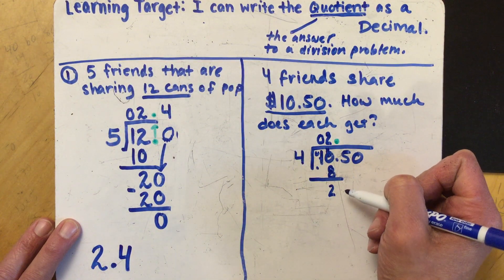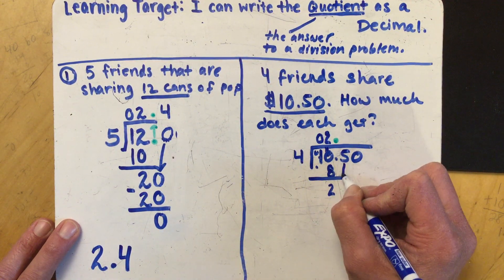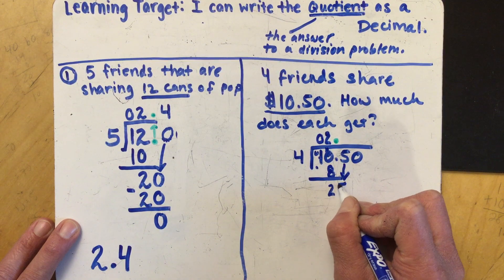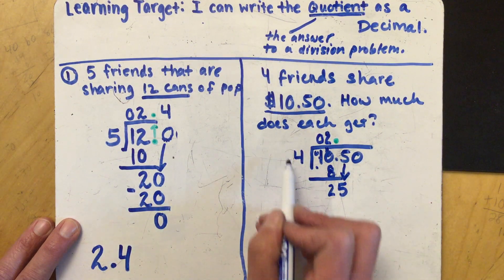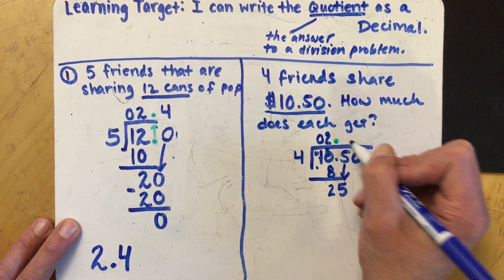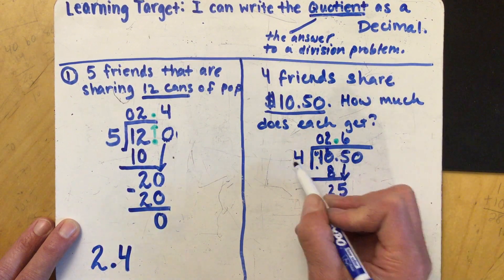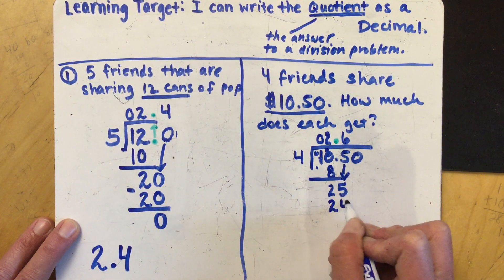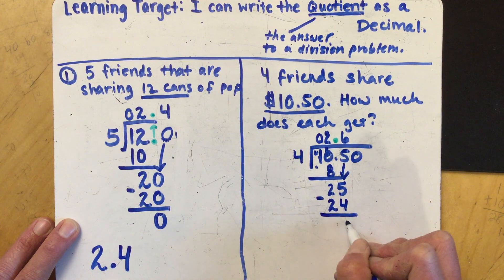This time I still have numbers over here so I'm gonna just bring those numbers straight down one at a time here. So I'm gonna bring my five down. Four goes into twenty five six times. Six times four is twenty four. And then the same thing here.